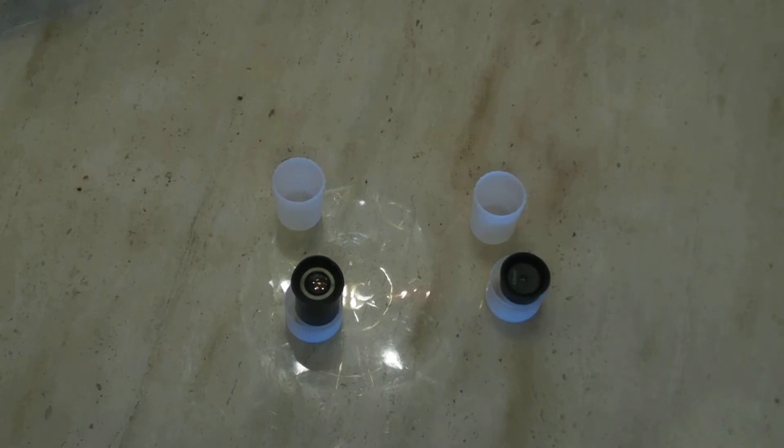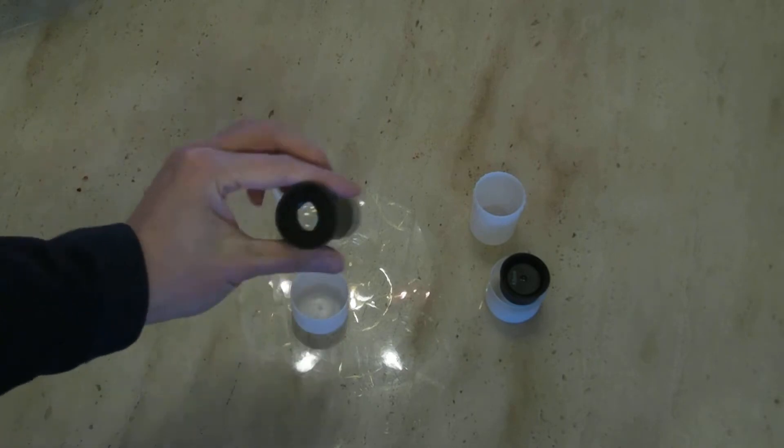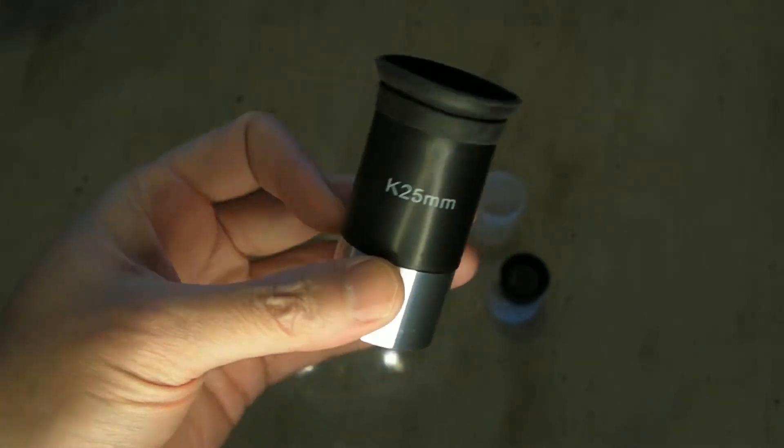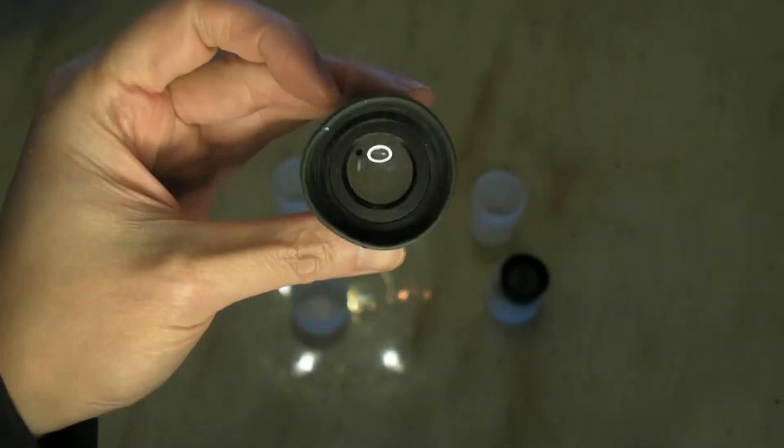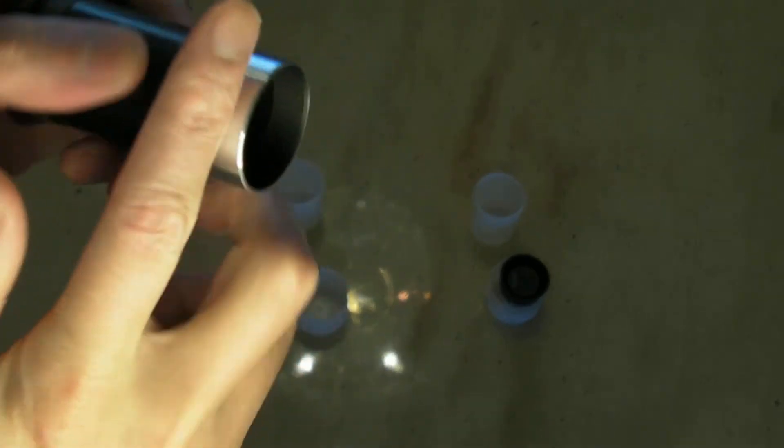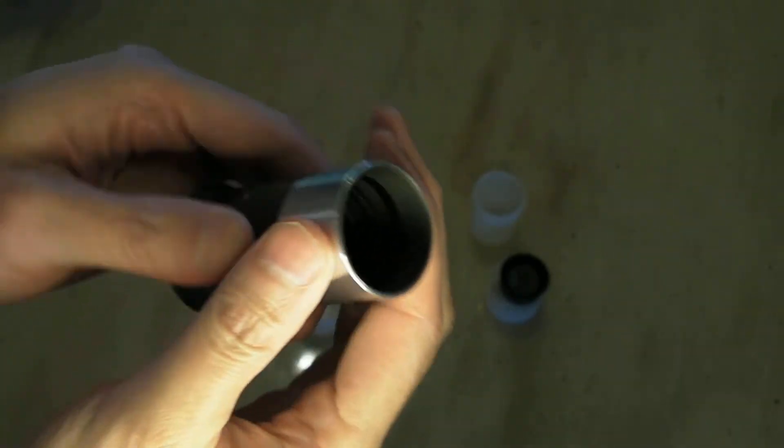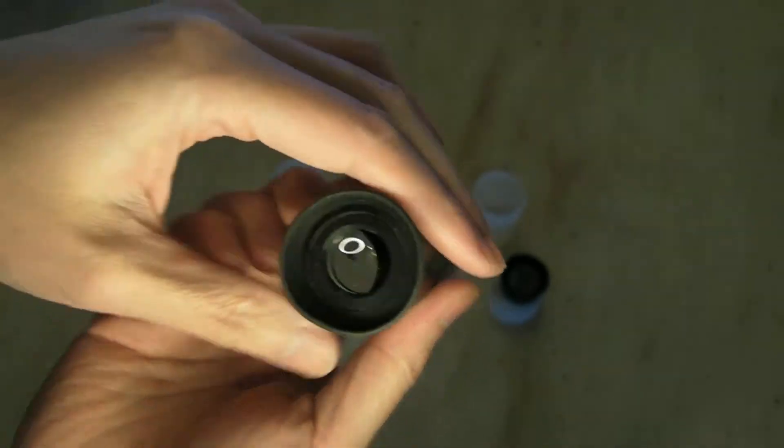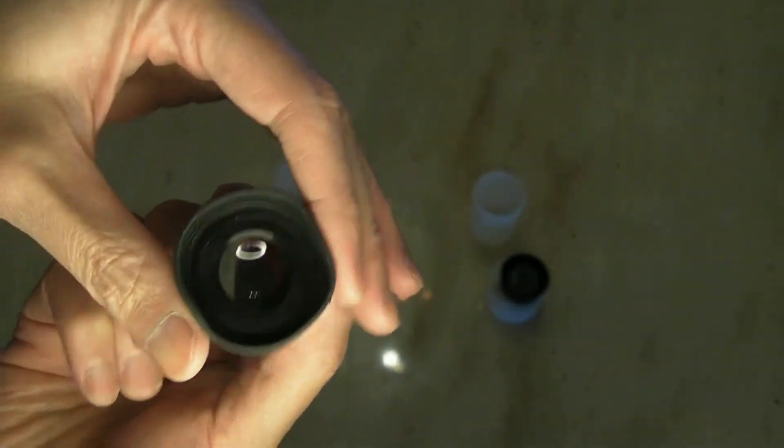The kit also comes with two eyepieces. And here's the first one. And this is a 25mm. This piece feels like metal. And this is glass. And a rubber housing here.